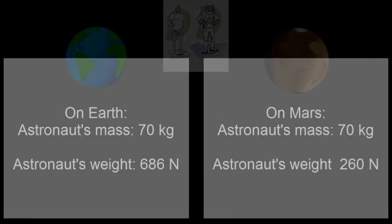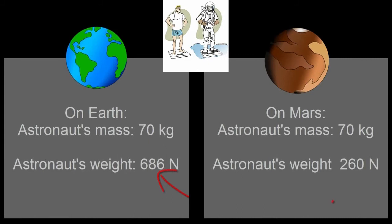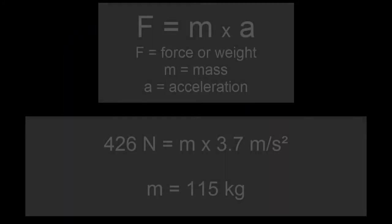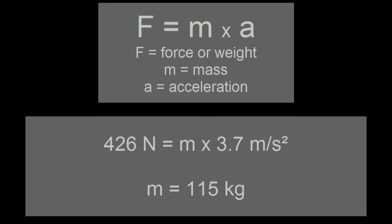If we take the difference between what the astronaut weighs on Earth and on Mars, we can see that they need to weigh 426 newtons, or 95 pounds, more. Once more, by using F = m × a, while using the Martian gravity of 3.7 meters per second squared, we can find out how much more mass the belt would need to add in order to make the astronaut weigh the same while on Mars. In this case, the astronaut will need an extra 115 kilograms in order to weigh the same on Mars as on Earth.